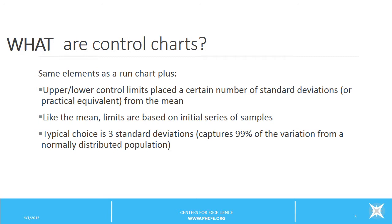Like the mean, limits are based on initial series of samples. The typical choice is three standard deviations from the mean. This captures 99% of the variation from a normally distributed population.